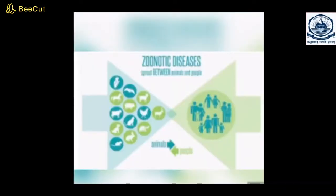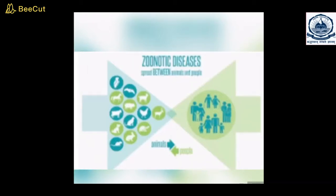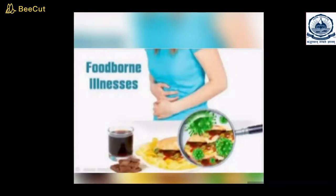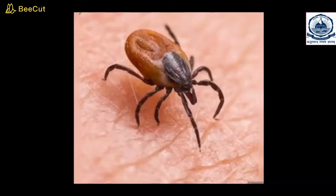Zoonoses are infectious diseases that can be spread from animals to humans and vice versa. Zoonoses can spread from direct contact with animals or indirectly through vector-borne or foodborne routes. Zoonotic diseases are very common.